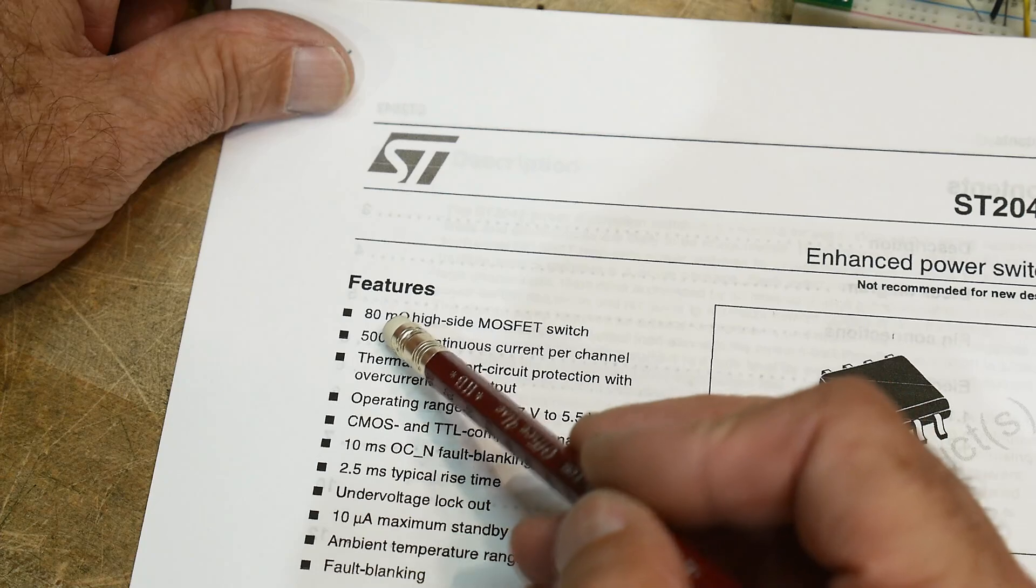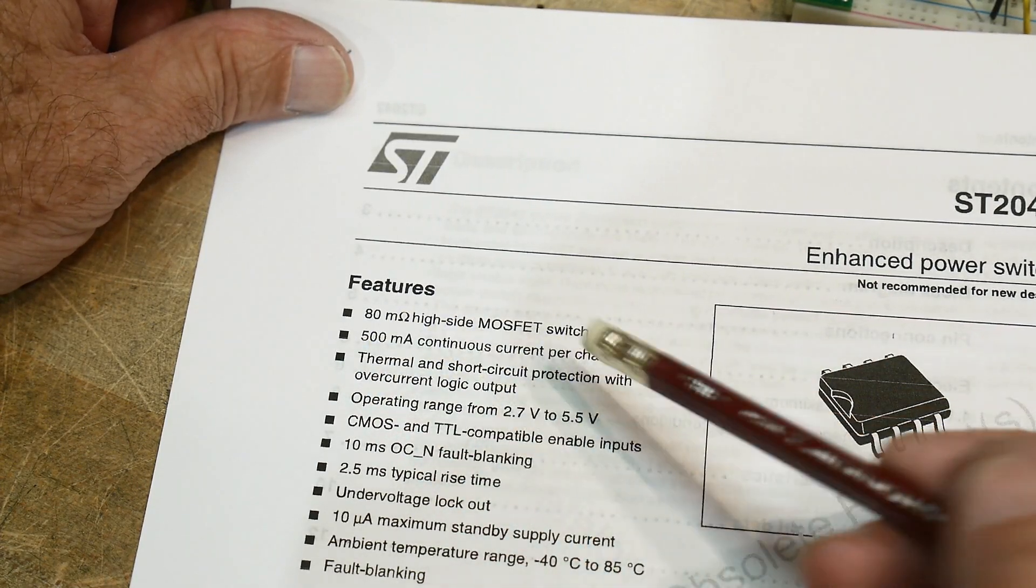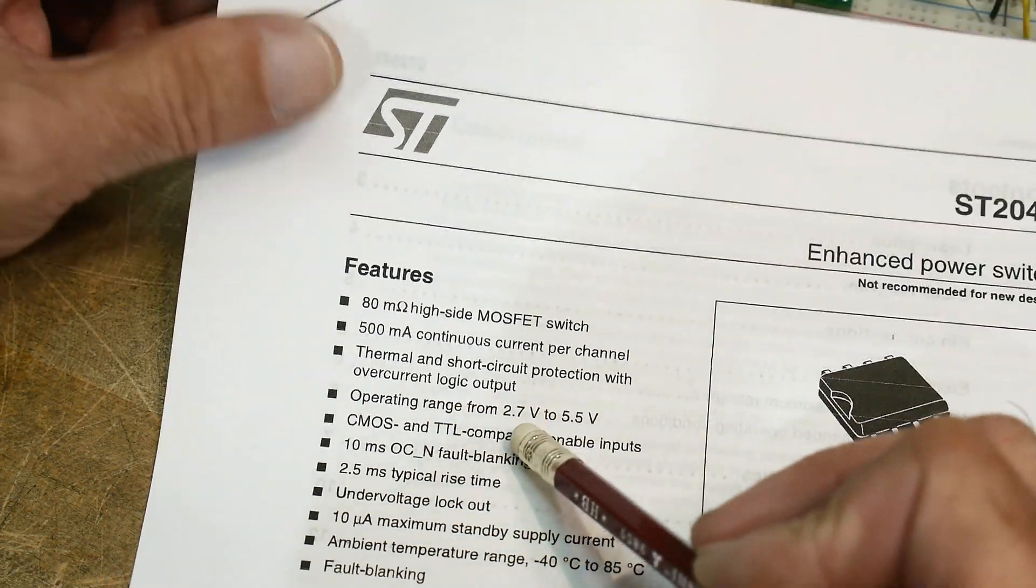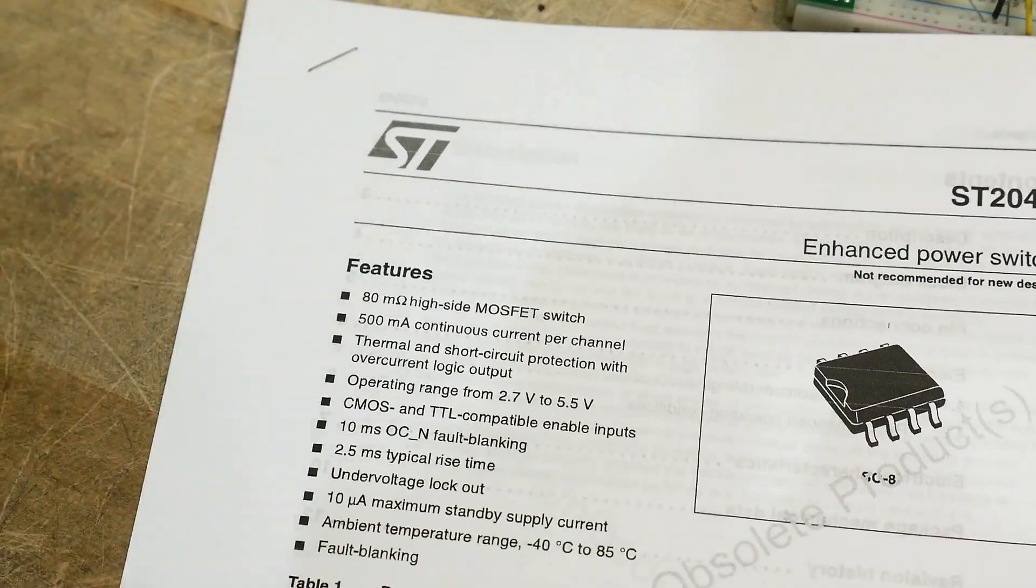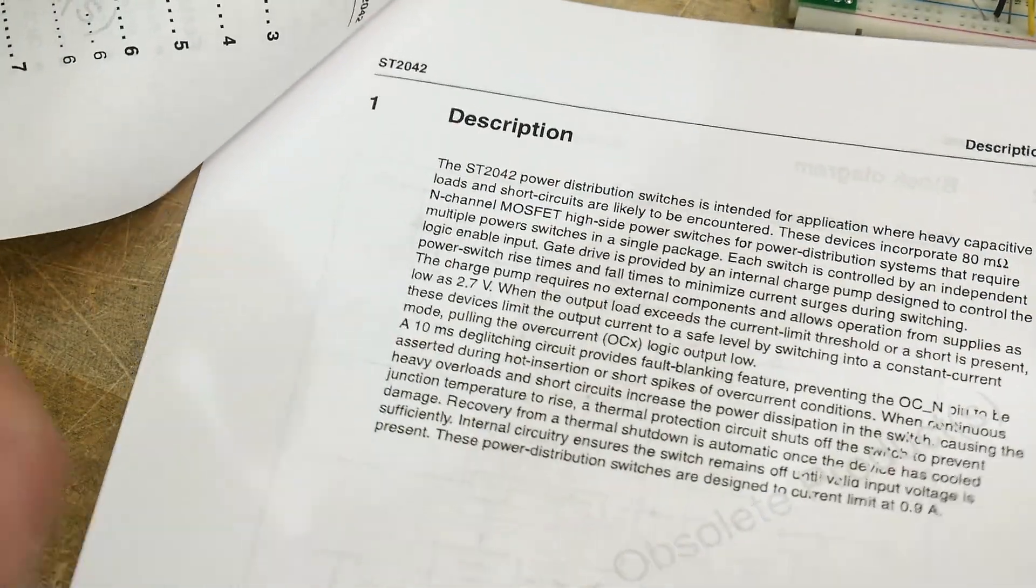80 milliohm high side MOSFET switch. So it's going to be a P channel, 500 milliamp continuous current per channel. It's two channel. Operates from 2.7 to 5.5 volts. So you can imagine this is like a 5 volt switch.